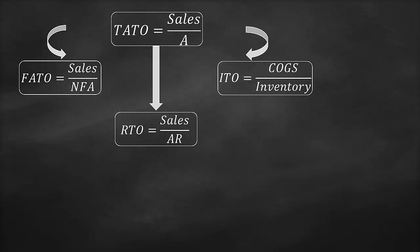Then we check the turnover ratios of the liability items. We have the payables turnover ratio, which is the cost of goods sold divided by the accounts payable.